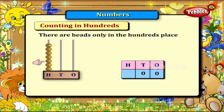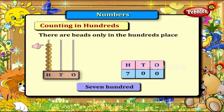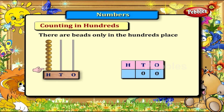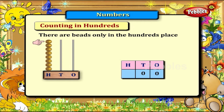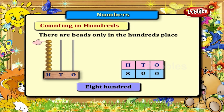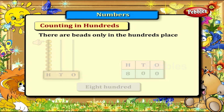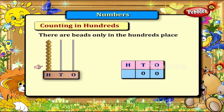For 700: 1, 2, 3, 4, 5, 6, 7 — seven beads for 700. For 800: 1, 2, 3, 4, 5, 6, 7, 8 — eight beads for 800.